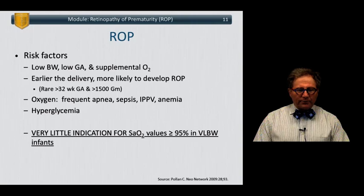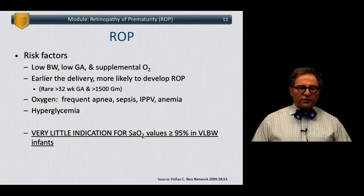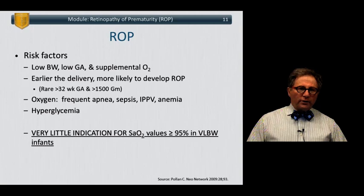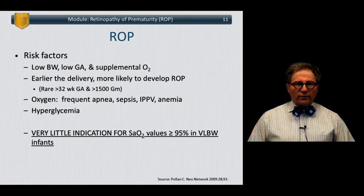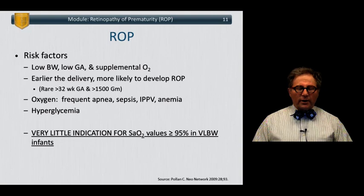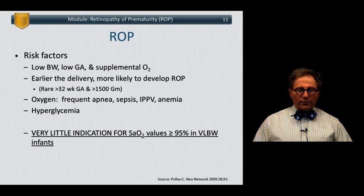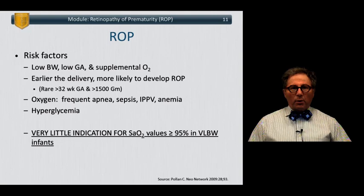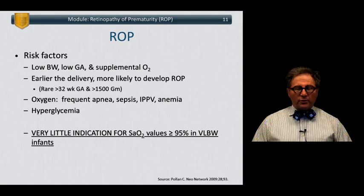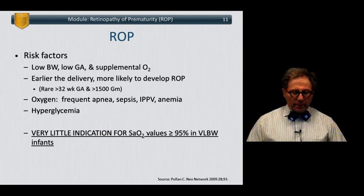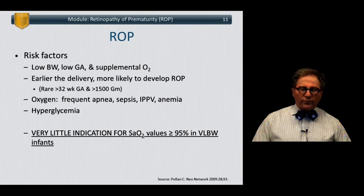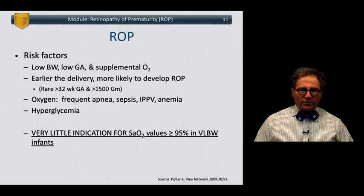The risk factors for retinopathy of prematurity include low birth weight, low gestational age, and supplemental oxygen. The earlier the delivery, the more likely the child is to develop ROP. Retinopathy of prematurity is a rare complication in infants born at greater than 32 weeks or weighing more than 1,500 grams. Other risk factors include frequent apneas, sepsis causing systemic inflammatory response, positive pressure ventilation, and anemia. Hyperglycemia has also been associated in some studies. In very low birth weight infants, there is very little indication to maintain saturation greater than 85% under any conditions.